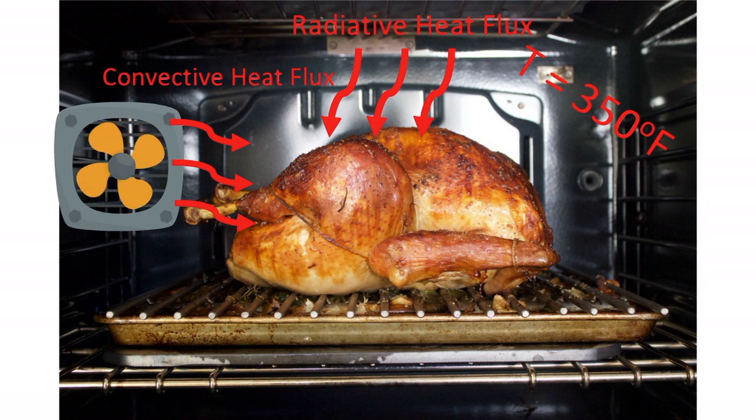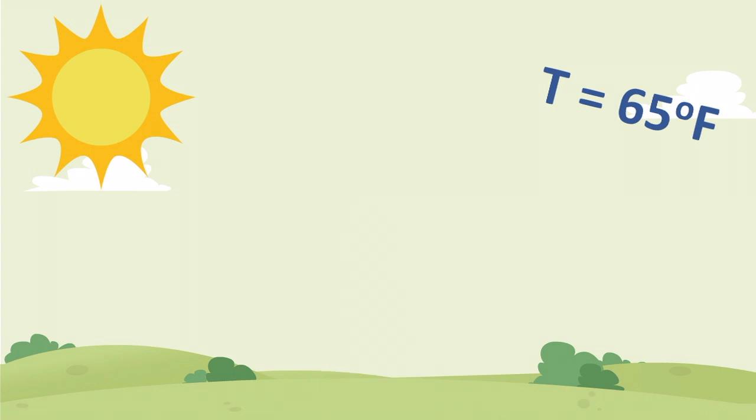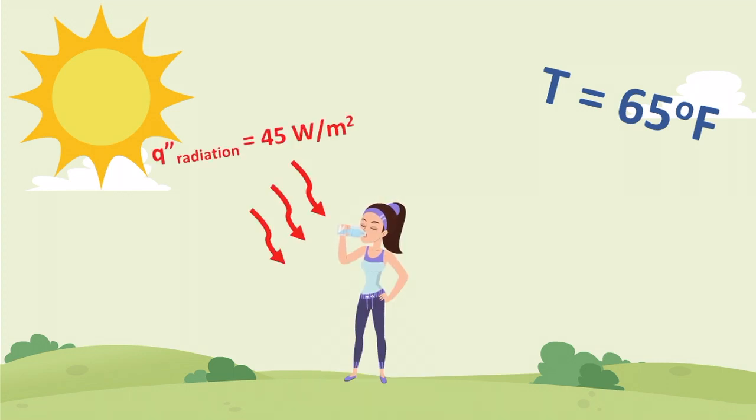Another example is how you feel outside. Say you're sitting outside under a tree and the temperature is 65 degrees Fahrenheit. Now take the tree away so that you're sitting under direct sunlight. The sunlight is a form of radiative heat flux which can be felt by your body.